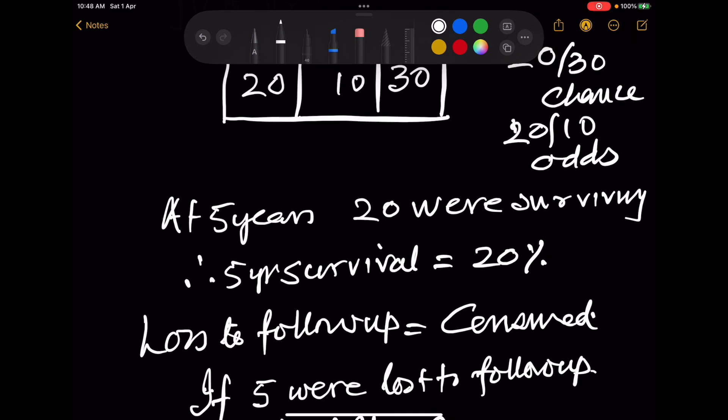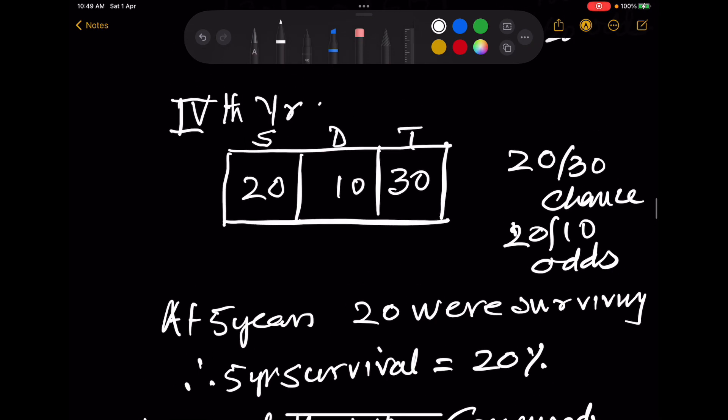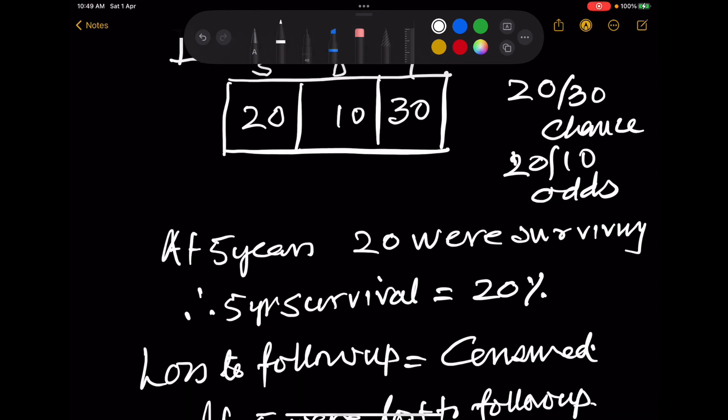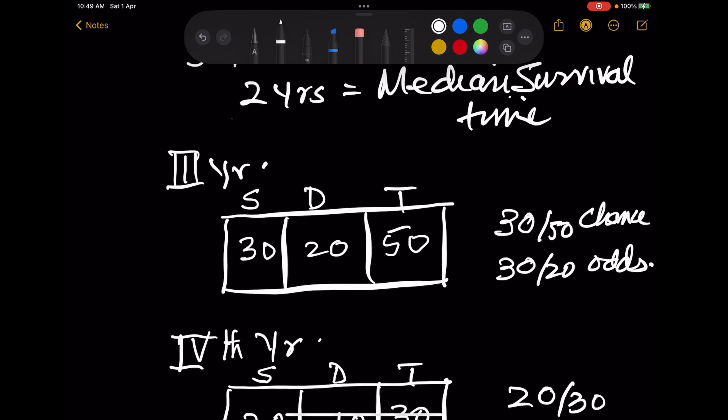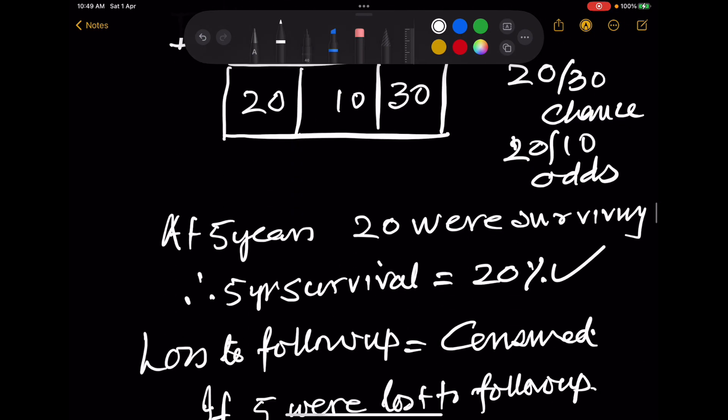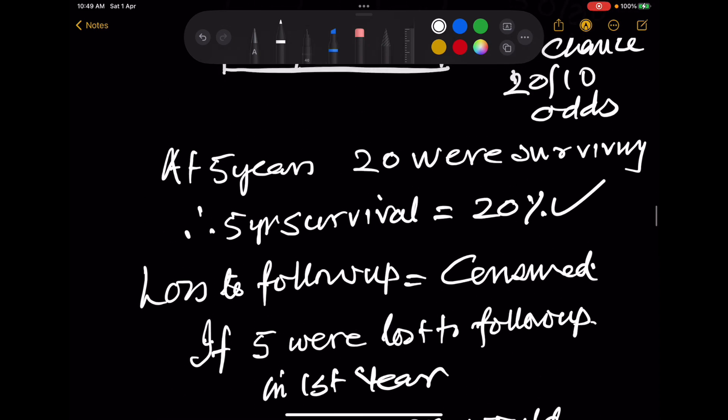At 5 years we can do the same thing—chance and odds over all time. At 5 years 20 were surviving, so we will call it that the 5 year survival is 20%. And at third year 50% were surviving, therefore the median survival time was 3 years. So you have understood the difference between median survival and 5 year survival.